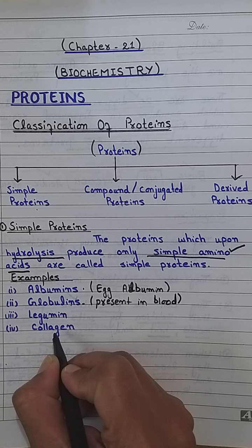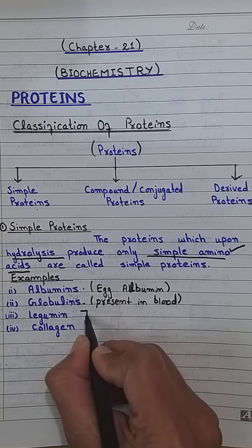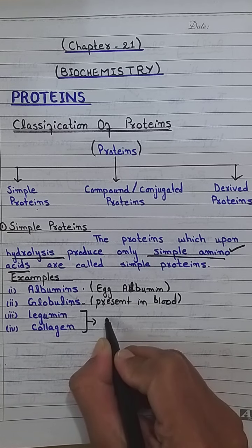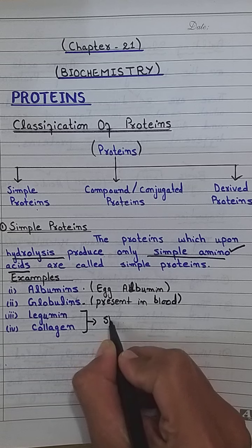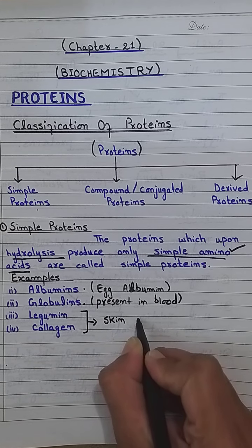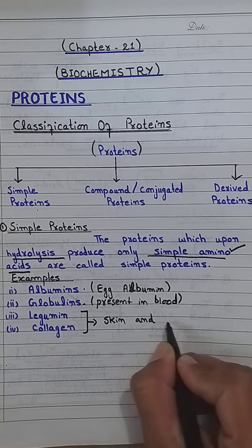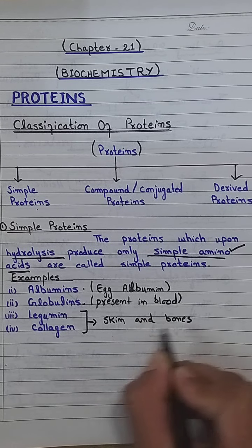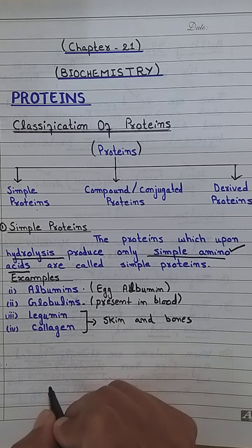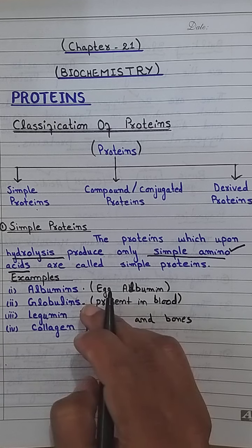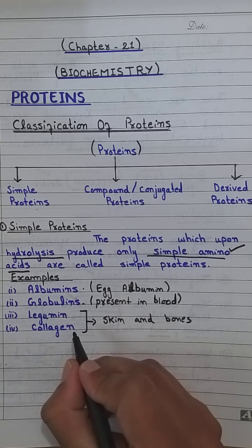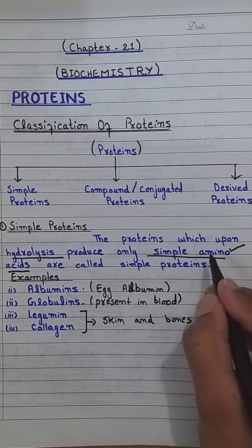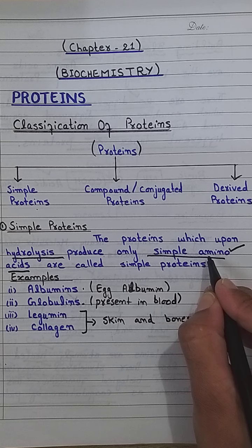Then, legumin and collagen proteins are also examples of simple proteins. These two proteins are present in the skin and bones of animals. All these proteins — albumin, globulin, legumin, and collagen — upon hydrolysis produce only amino acids.